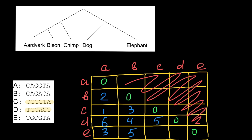Now we compare species E and C: one, two — only two nucleotide differences, let's put two here. And the last comparison: species D and E — same, same, same, one, two, three — three nucleotide differences. And with that, we've finished our table.